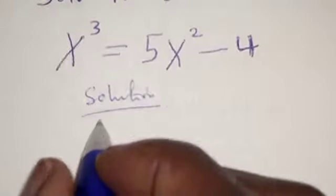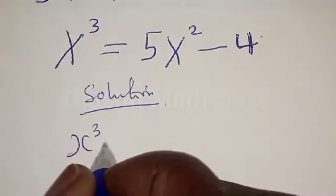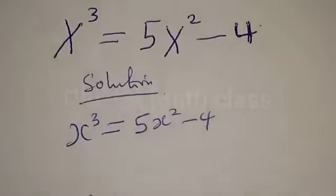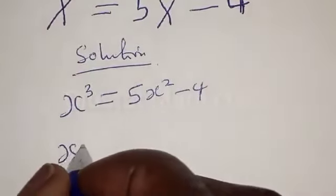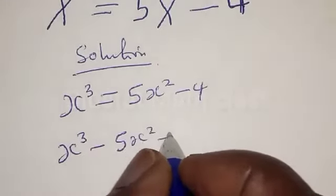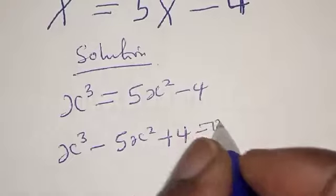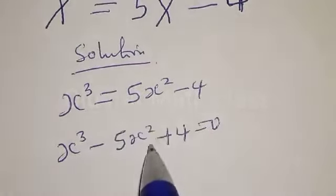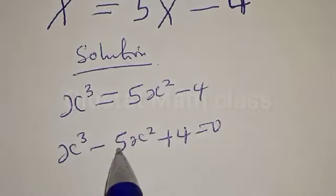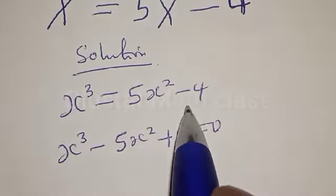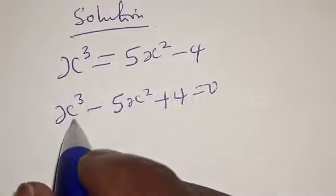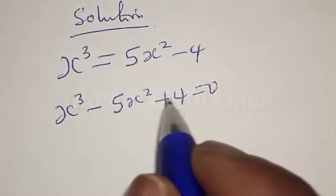We have s raised to power 3 equal to 5s squared minus 4. This can be expressed as s raised to power 3 minus 5s squared plus 4 equal to 0. We want to equate this to 0. When 5s squared crosses to the other side it becomes minus 5s squared, and minus 4 becomes plus 4. Therefore our equation becomes s³ minus 5s squared plus 4 is equal to 0.